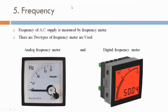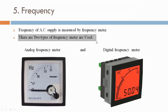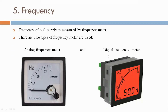Now we are discussing frequency. The frequency of AC supply is measured by a frequency meter. There are two types of frequency meter used: one analog frequency meter and one digital frequency meter. The unit of frequency is Hz (hertz). In India we use 50 Hz frequency, and in foreign countries 60 Hz frequency is used.